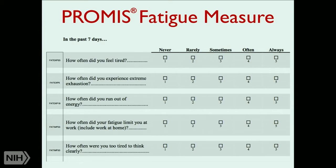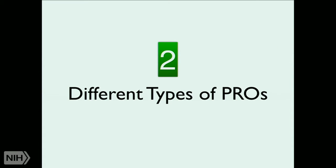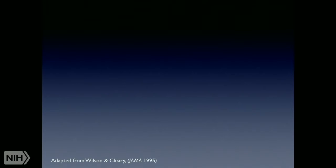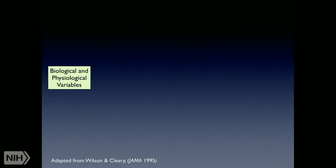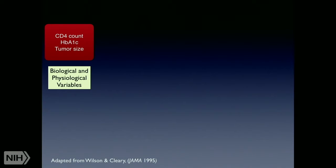Let's talk about the different types of patient-reported outcomes. I'll walk through a model adapted from a wonderful article by Wilson and Cleary published in JAMA in 1995. Their terminology is a little older, but it still drives our field. We begin with biological and physiological variables — things like CD4 count, HbA1c, or tumor size. These are measures of how the state of the body has changed. Those bodily changes give rise to different symptoms — symptom status like pain intensity, nausea, or urinary straining — and this is the first point where we start to see a potential for a patient-reported outcome.